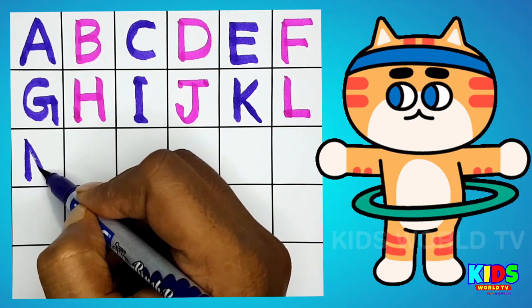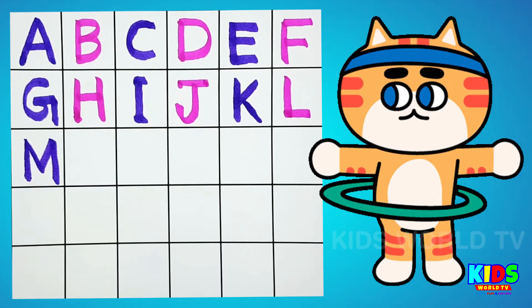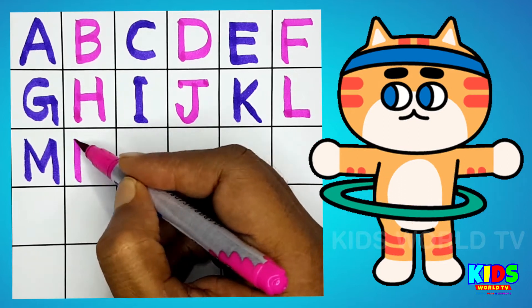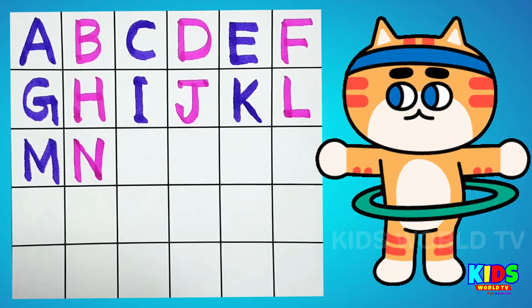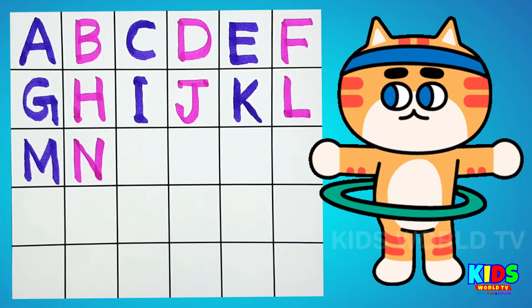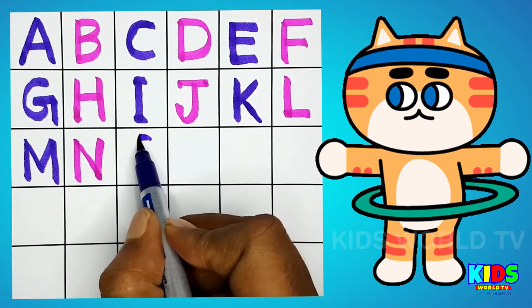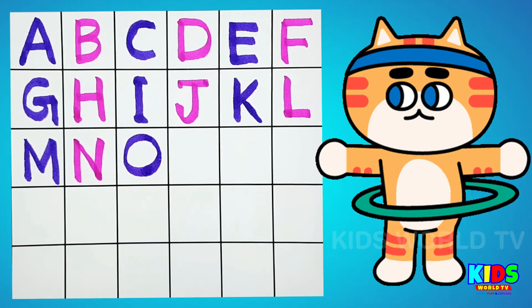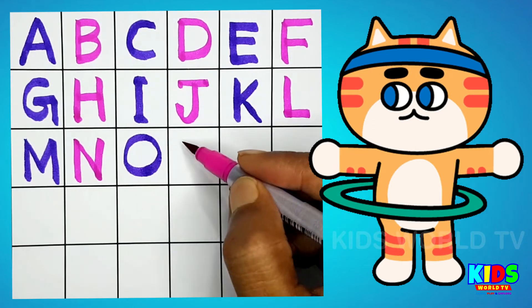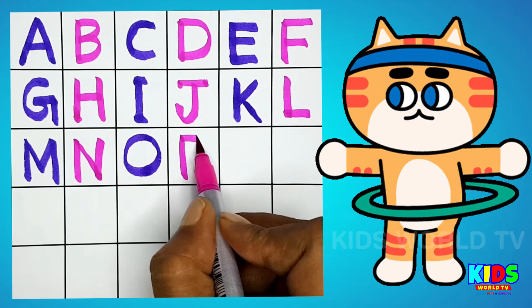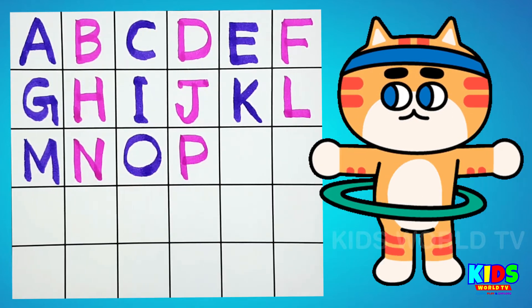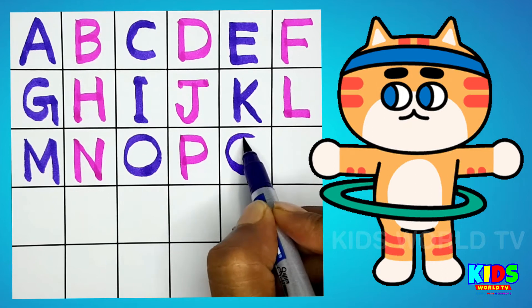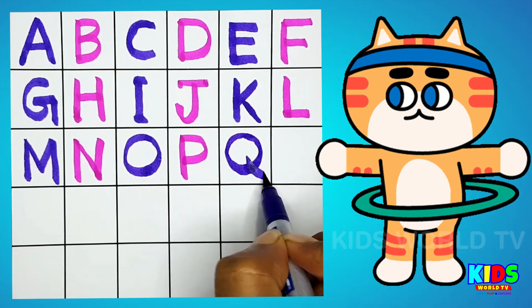M for Monkey. N for Nest. O for Octopus. P for Parrot, Q for Queen.